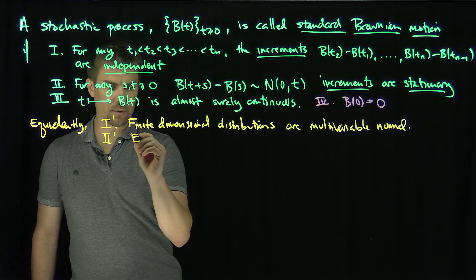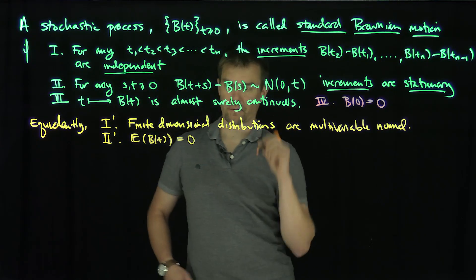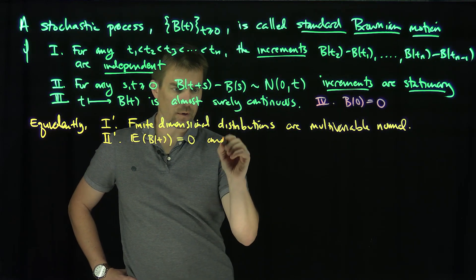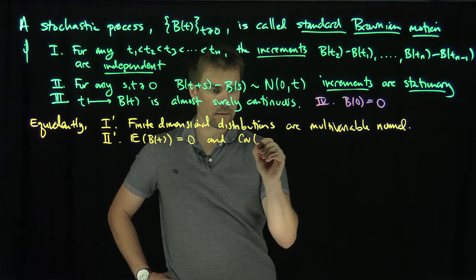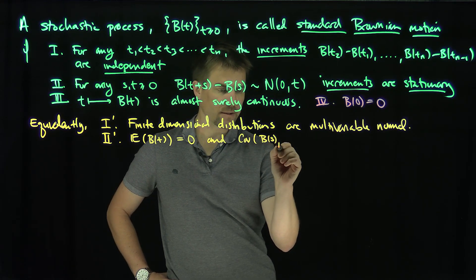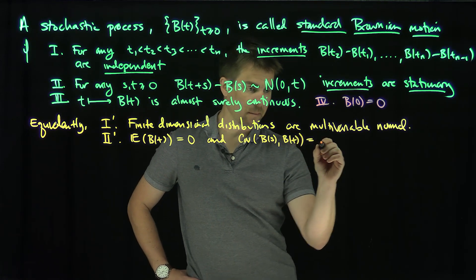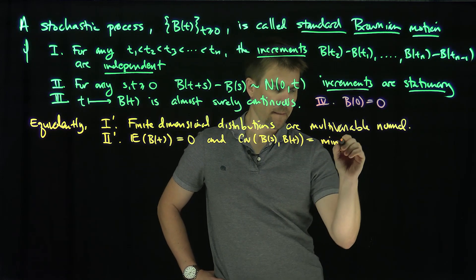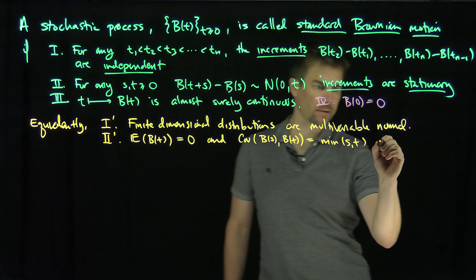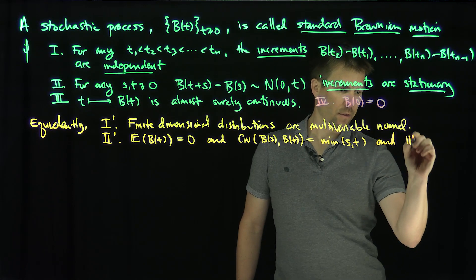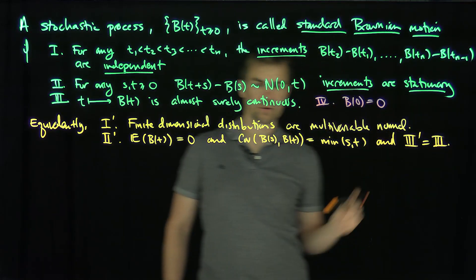The equivalent conditions are: condition two prime states that the expected value of b of t is equal to zero, and moreover the covariance of b(s) and b(t) has to be the minimum of s and t. Condition three prime is the same as condition three — that the paths are almost surely continuous.